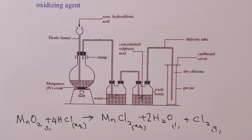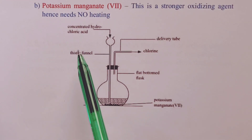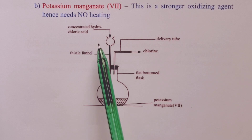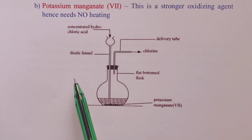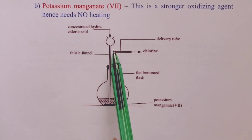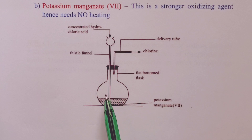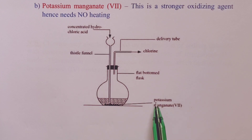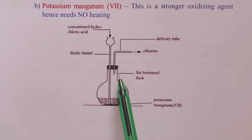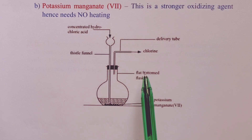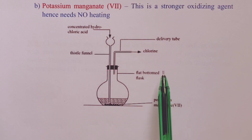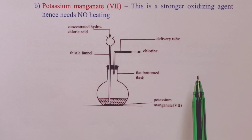Our next oxidizing agent is potassium permanganate (KMnO₄). While using potassium permanganate, we shall need no heating because this is a stronger oxidizing agent compared to manganese(IV) oxide. Concentrated hydrochloric acid is still brought in through the thistle funnel and we have our solid potassium permanganate in a flat-bottomed flask. We generate chlorine and the rest of the setup — drying and collection — is the same as in the previous setup.